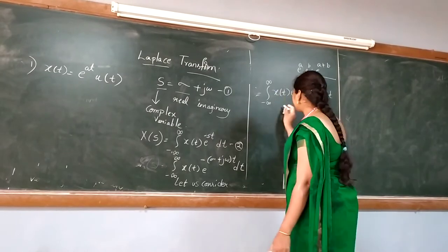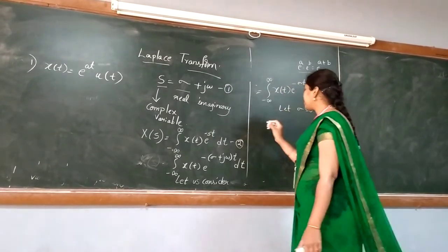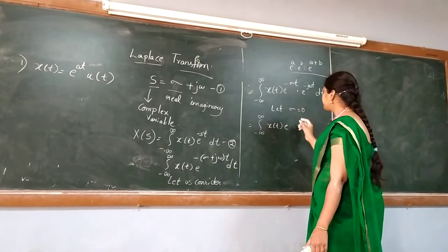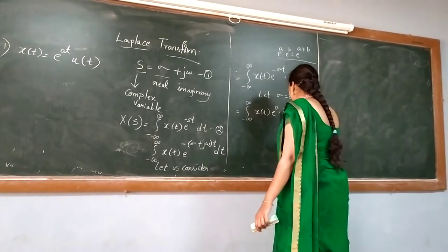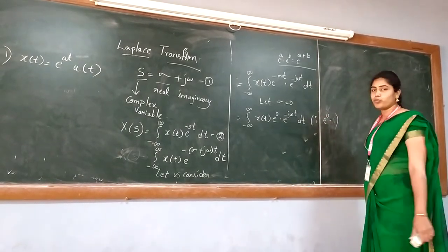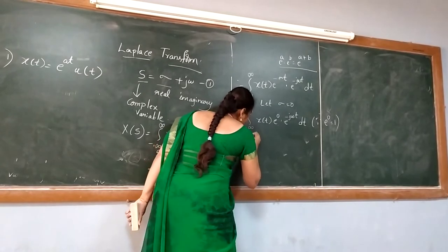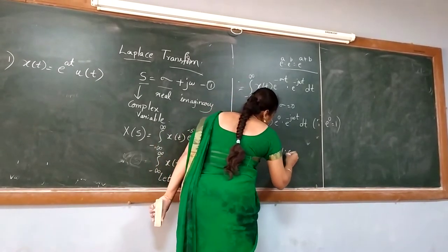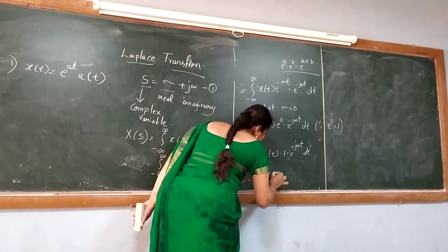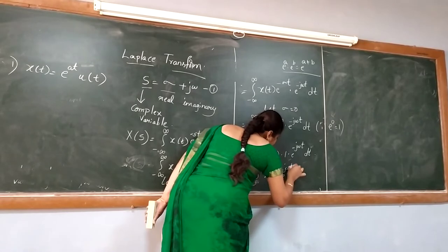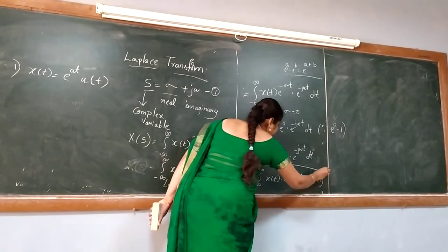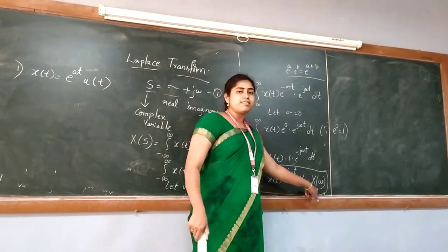Now I am considering σ = 0. When σ = 0, x(t) remains the same, and in place of σ I substitute 0, so e^(−σt) becomes e^0 = 1. So we have the integral from minus infinity to infinity of x(t)·1·e^(−jΩt) dt. At last we got the equation: integral from minus infinity to infinity of x(t)·e^(−jΩt) dt, which is nothing but capital X(Ω). Capital X(Ω) represents the Fourier transform.